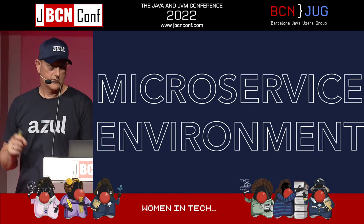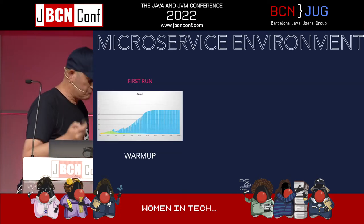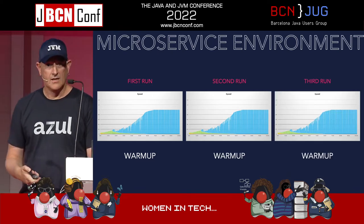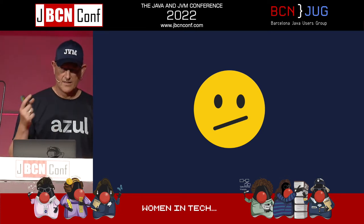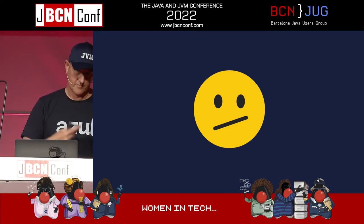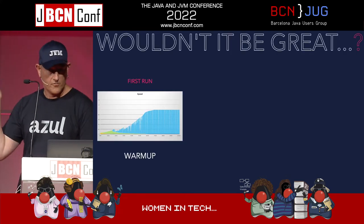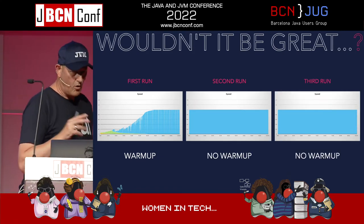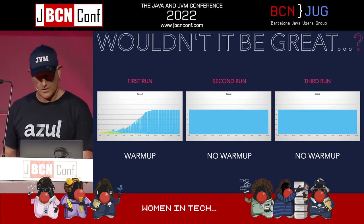If you run in a microservice environment, you see the warm-up cycle every single start: first start warm-up, second start warm-up, and so on. This is a problem for AWS Lambdas, for example - it's not big code but you have to warm it up first. Wouldn't it be great if the first time you warm up, but every subsequent time you start at full speed? That's what we'd like to achieve.